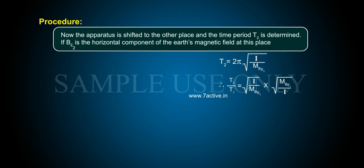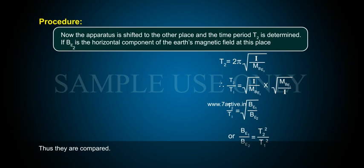Therefore, T2 by T1 is equal to the square root of BE1 by BE2, or BE1 by BE2 is equal to T2 squared by T1 squared. Thus, they are compared.